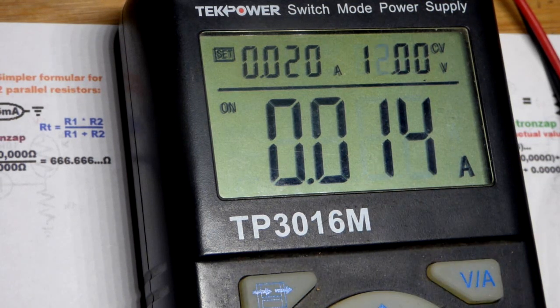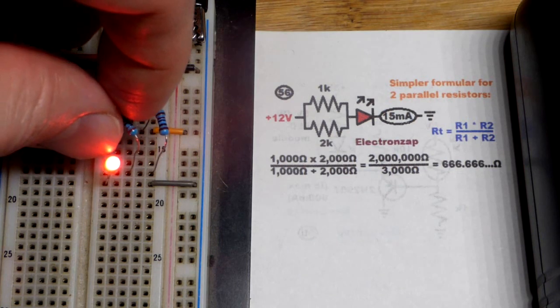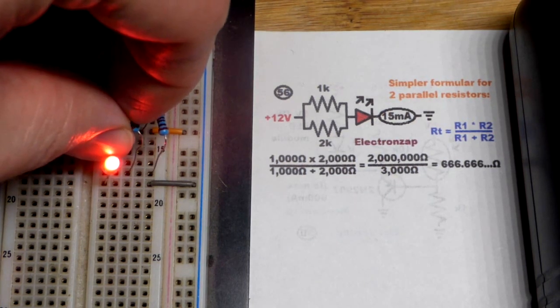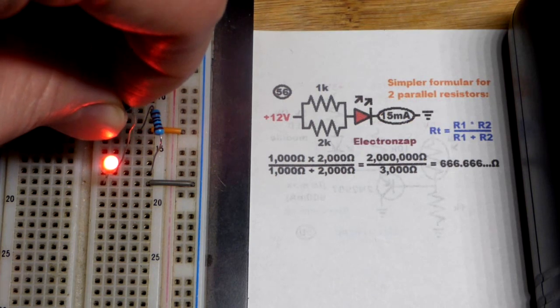But this isn't as accurate as a multimeter either. So be aware of that. But in any case, so this is the 2,200 ohm resistor. If you look at this LED, I think if I have my finger next to it, you can tell a little bit better. It got slightly dimmer.